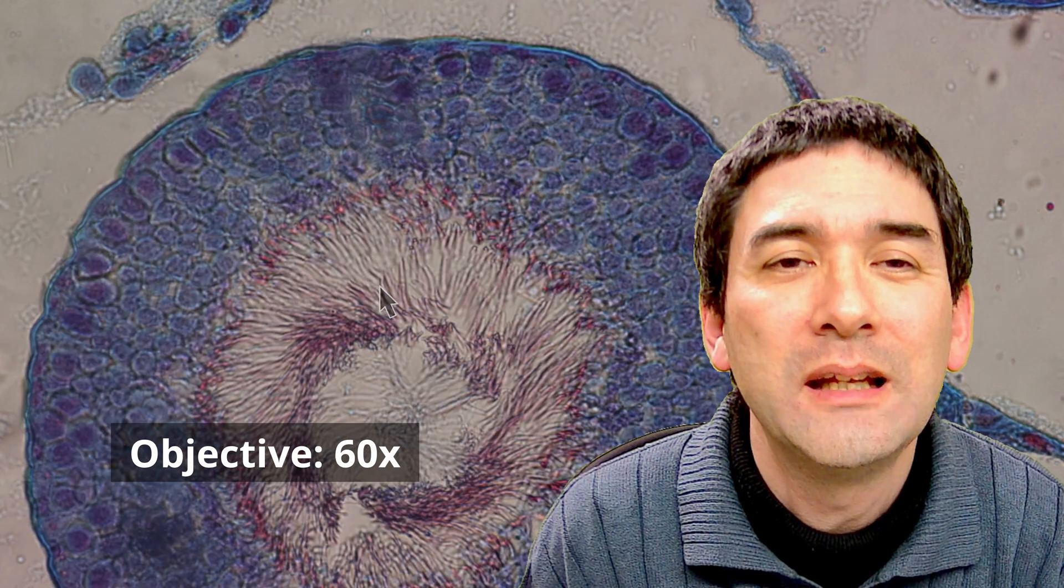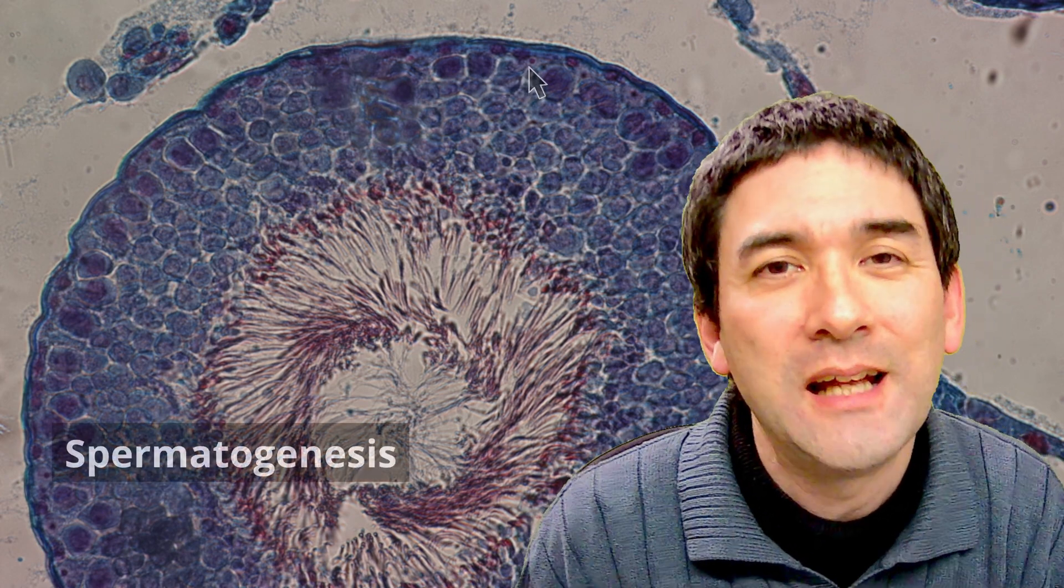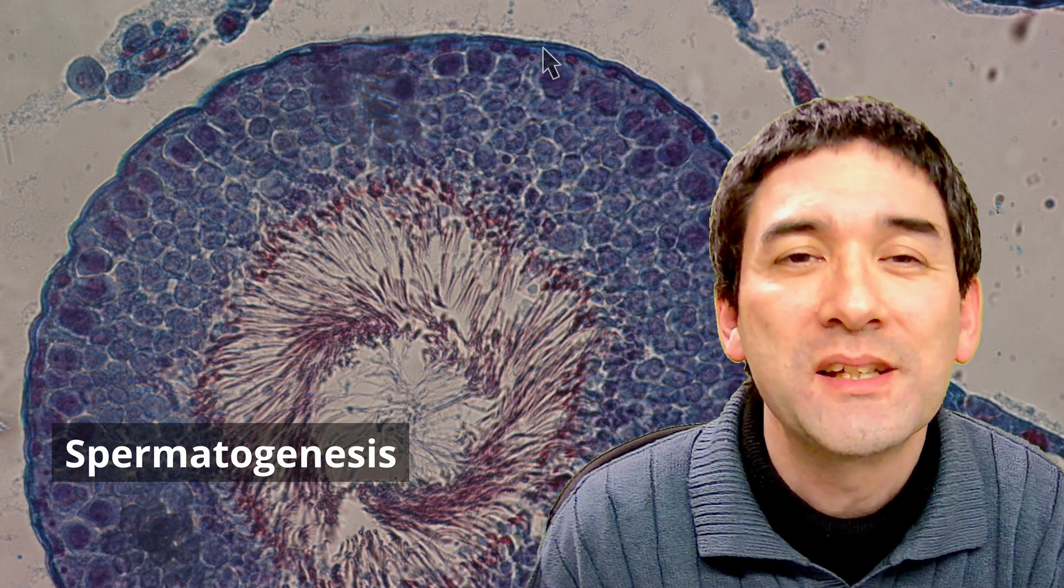And I think what I'm going to do now is I'm going to zoom in a little bit more. I'm already at the maximum level that's possible here, but I think that's going to be fine. So what we're going to do is I'm going to step you through the process of spermatogenesis now, which is the making of those sperm cells. And what we're doing is we're starting here right on the outside of the seminiferous tubule.